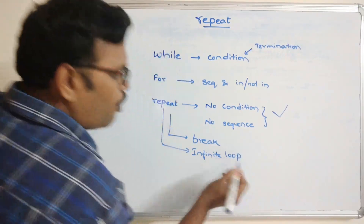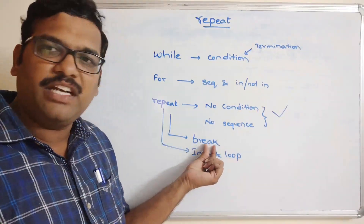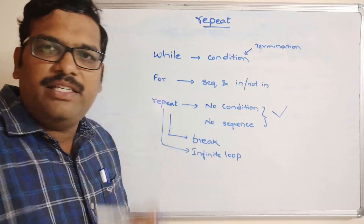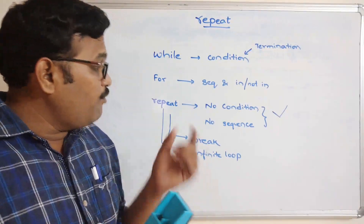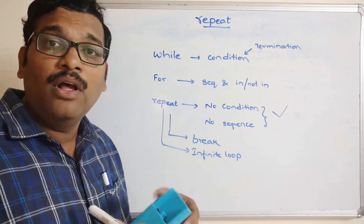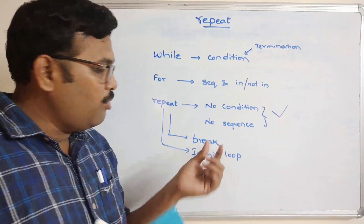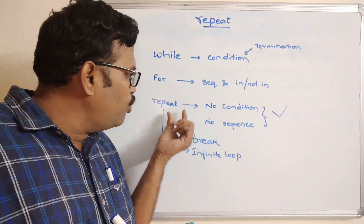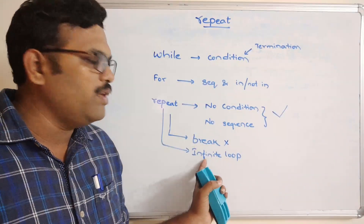Repeat is always an infinite loop, and the infinite loop will be terminated only with the help of a break statement. We are not writing any condition, not writing any sequence — just by using the repeat keyword we execute the same set of instructions multiple times. Whenever the break statement gets executed, the loop terminates. In the absence of break, repeat will always be an infinite loop.